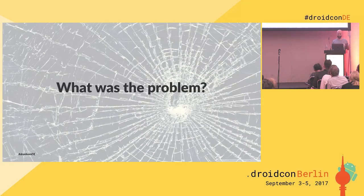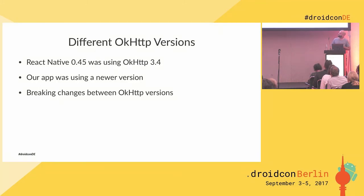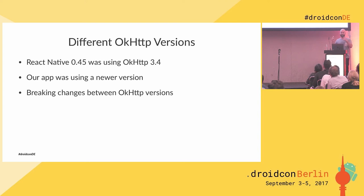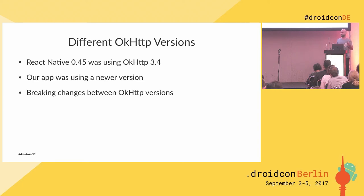Simple enough, right? No. When I tried this, React Native was using a different version of OKHttp than our app was. We were using something newer and they were still using 3.4 — this was a few months ago. And if you're playing Square Library bingo, there's your mention for this talk. Between OKHttp 3.4 and 3.6, there were a bunch of breaking changes — some packages got added and moved. That meant we couldn't just put React Native in our app and proceed with all the fun stuff.